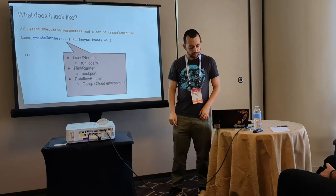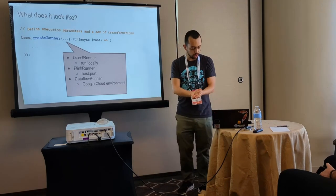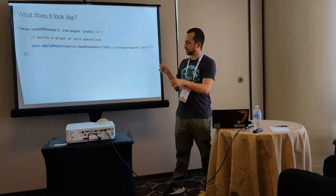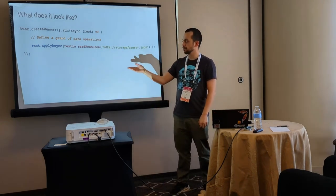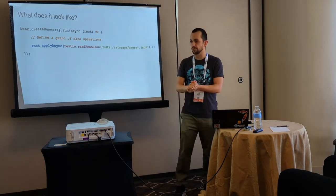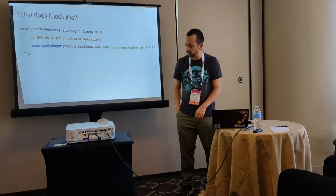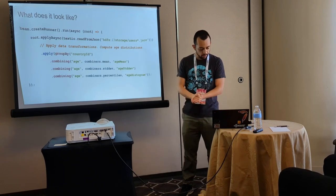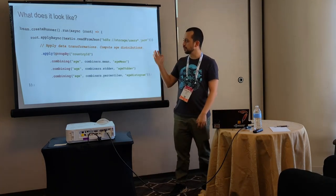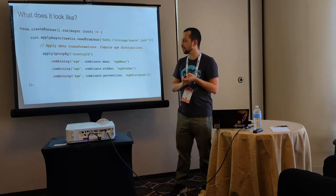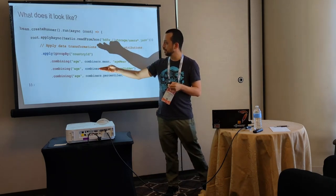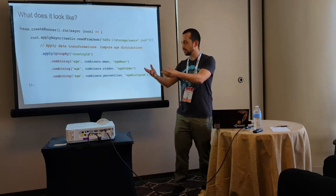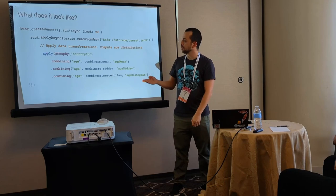Once you have the runner instance, you can tell it to run a job definition that you pass as a function. What could the job definition look like? You basically define a graph or a series of data operations. For example, here we want to read a bunch of data from a distributed file system — we tell it to read this data from some JSON files, assuming they are a bunch of sharded files. Once we've read it, we can do other things. Let's say we're reading information about our users and want to compute age distribution. First we read the data from JSON, and we obtain an abstract collection, sort of like an RDD or a dataset or a dataframe.